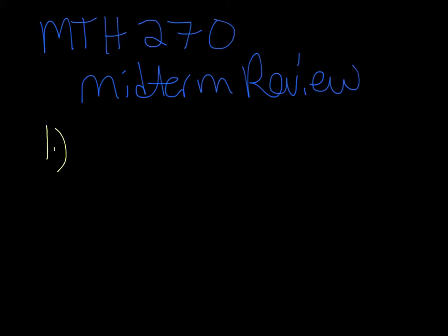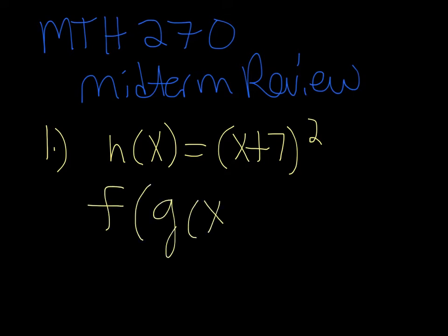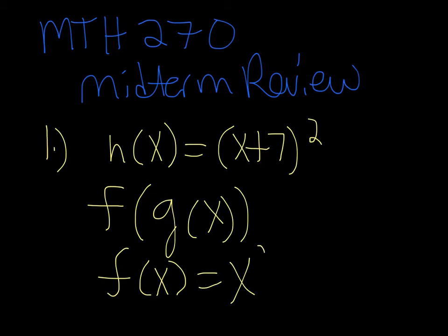Number one: you were given a function h of x is equal to x plus 7, squared, and that can be expressed in the form of f of g of x, where f of x is x squared. If you're trying to do a composition and the outside function is x squared, then the inside function, or g of x, must be the inside here, which is x plus 7.